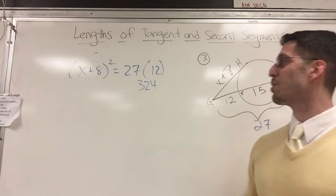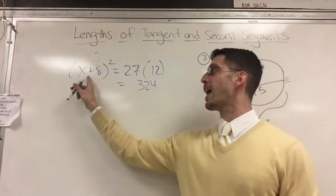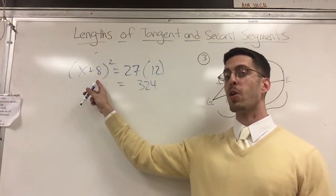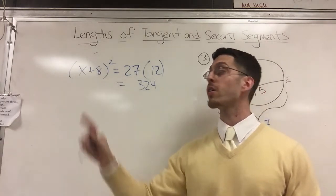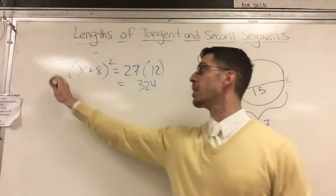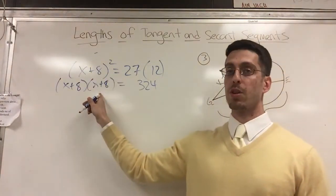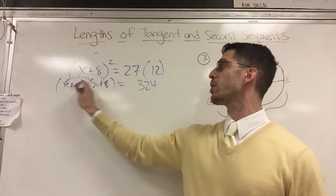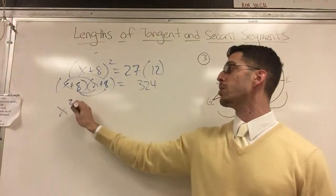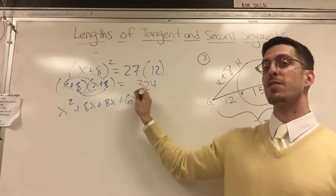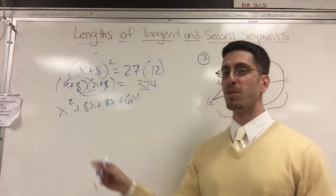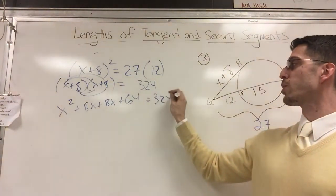X plus 8 squared. How do you find the square of a binomial? You remember: it's x plus 8 times itself. When I do that, I'm going to use something called FOIL - first, outer, inner, last. That gives me x squared plus 8x plus another 8x plus 64. This is all review from algebra.